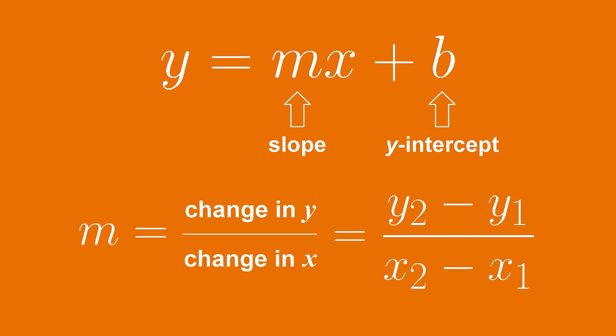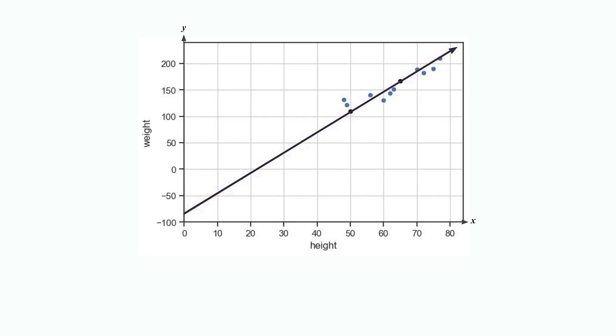Now, we just have to plug in our values m and b into our equation for a line, and boom, we have a linear model for our data. We can now use our model to predict how much someone might weigh given their height.